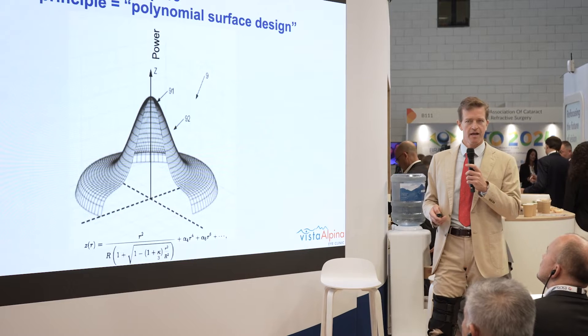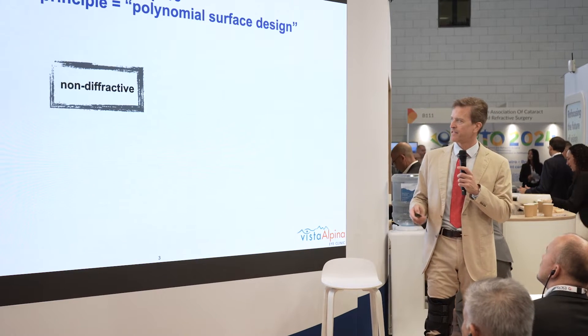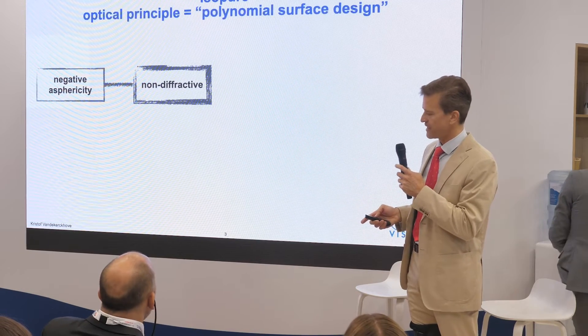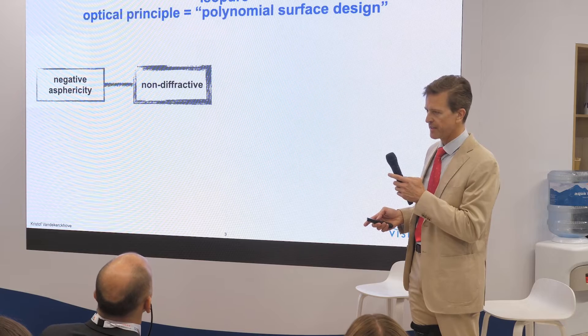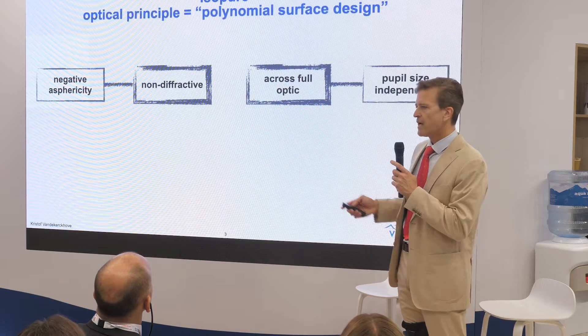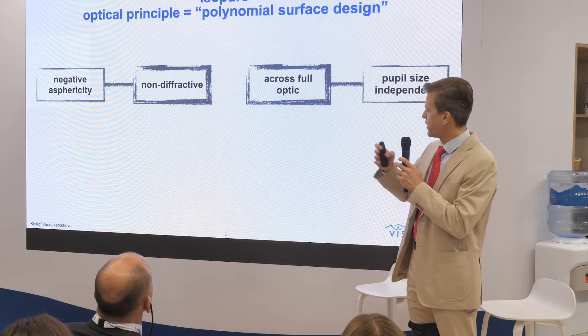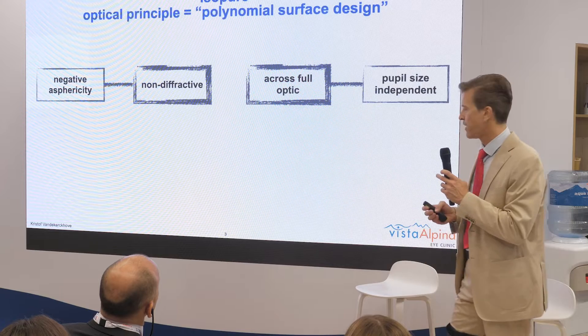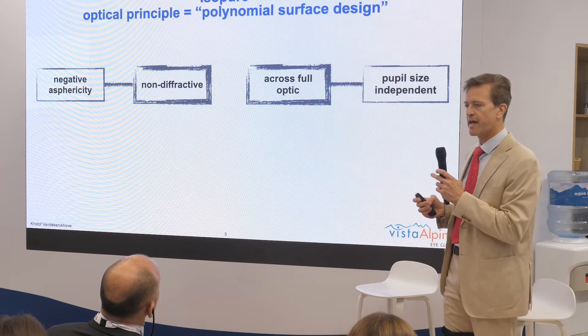The key thing to know is simply that it's a non-diffractive mechanism. The isopure lens works with negative asphericity, and the effect is across the full optic, unlike some other lenses.